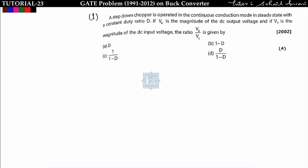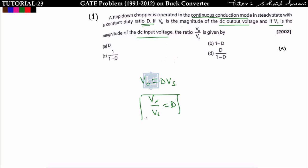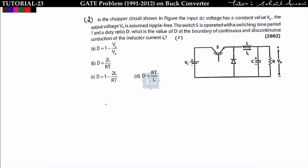The first problem: a step down chopper is operated in continuous conduction mode in steady state with a constant duty ratio D. If V_naught is the magnitude of DC output voltage and V_s is the magnitude of DC input voltage, find the ratio V_naught upon V_s. We know that V_naught is equal to D·V_s, so V_naught upon V_s equals D. Since this is a step down chopper, option A is correct.